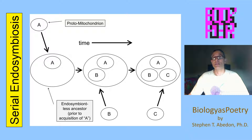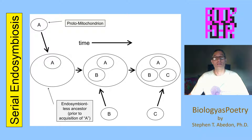Instead, what we typically see in mitochondria and plastids is the retention of tens or even a hundred or more genes in association with these organelles. Thus they remain as essentially bacterial cells living inside eukaryotic cells, but they are much reduced in their genetic potential compared to the cells they were when first acquired as endosymbionts.